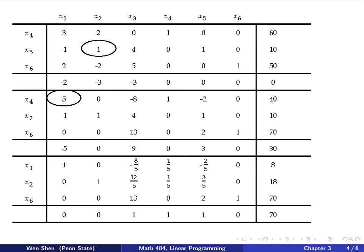So let's use the simplex tableau. The first part of the tableau is exactly the canonical form we had on the previous page. I recorded all the variables here, these are the basic variables, these are the coefficients, and the right-hand side. This one is the objective function. I check if any of the objective row coefficients are negative. I find that all of them are negative, so I need to choose the most negative. I see these two are the same, so I just pick x2.